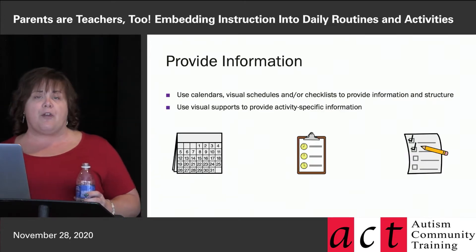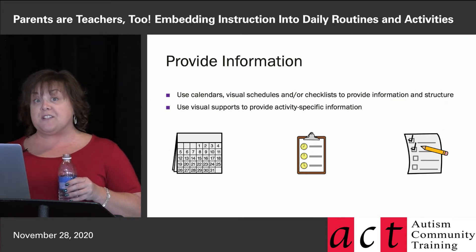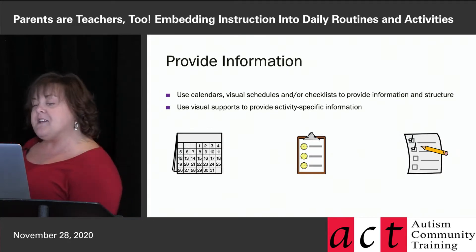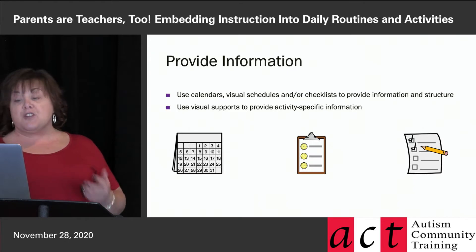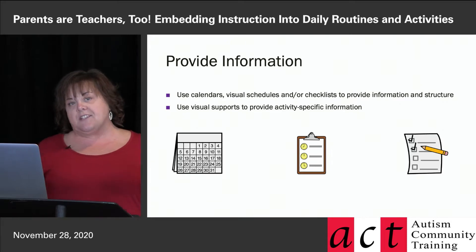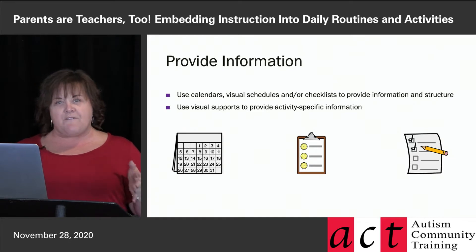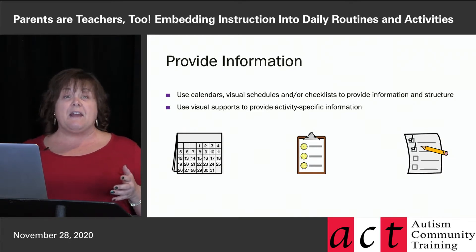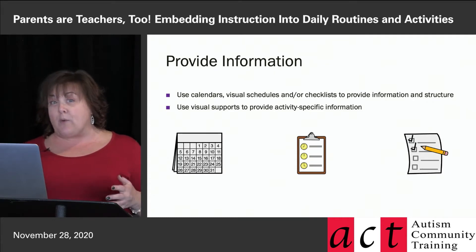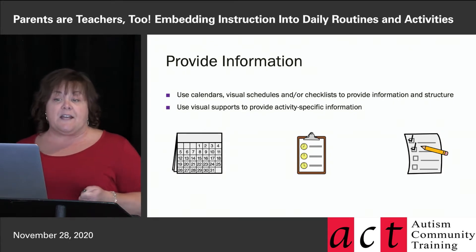To give some general thought to this, what we want to do first is make sure we're providing information to children so they know what the expectations are and what you want them to do. You'll want to use things like calendars, visual schedules, and checklists to provide information and structure. Some of the targets you might focus on include organizing, knowing what happens first, second, third, making preparations, and engaging in time management.